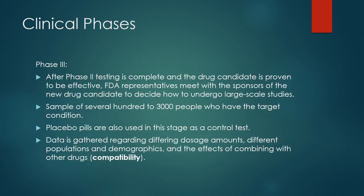After the completion of Phase 2 testing, drug candidates that have proven to be effective are taken to Phase 3. FDA representatives meet with the sponsors of the new drug candidate, which is usually a pharmaceutical company, and decide how to do these studies. Phase 3 trials are also done on volunteers with the target condition and include placebo pills, but the sample size is much larger — up to 3,000 people.